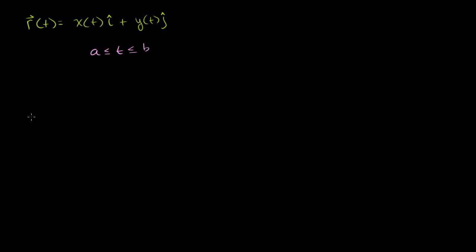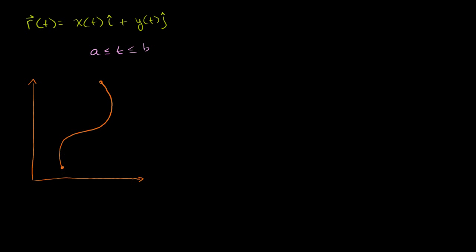This curve will look something like — let me draw some random curve here. So let's say the curve looks something like that. This is when t is equal to a, going in this direction, and this is when t is equal to b. So this right here would be x of a, and this right here is y of a. Similarly, this is x of b, and this over here is y of b.